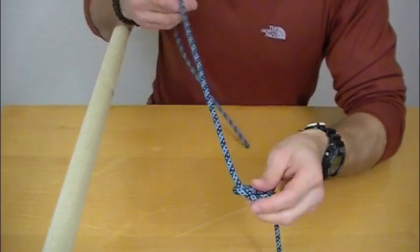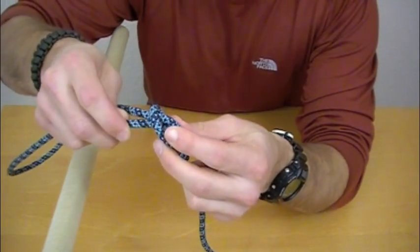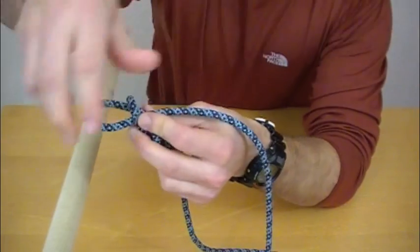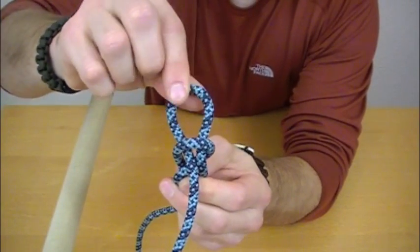Once you have your figure eight, you're going to take the working end and actually come back through the top of the figure eight. And what this is going to do is form a bite here in the top of the figure eight.